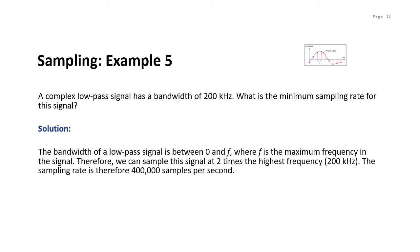Let's see another example involving a low-pass signal with a bandwidth of 200 kHz. In a low-pass signal, the bandwidth is equal to the maximum frequency, so the minimum sampling rate is 2 times 200 kHz, giving 400,000 samples per second. The bandwidth of a low-pass signal is between 0 and F, where F is the maximum frequency and also equal to the bandwidth.